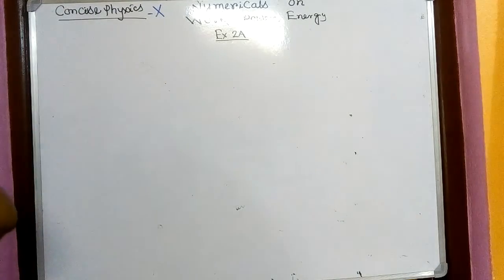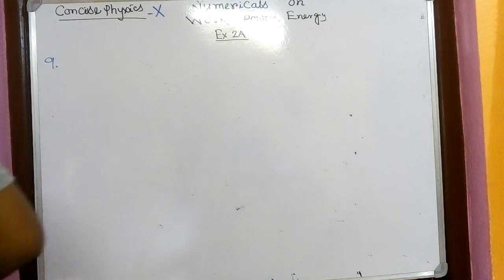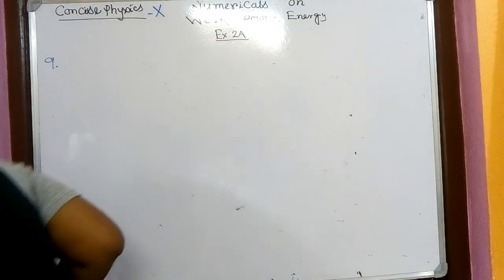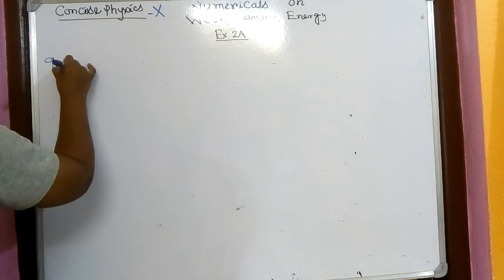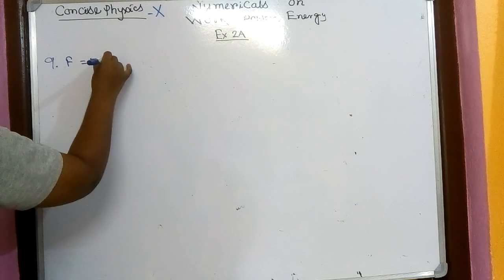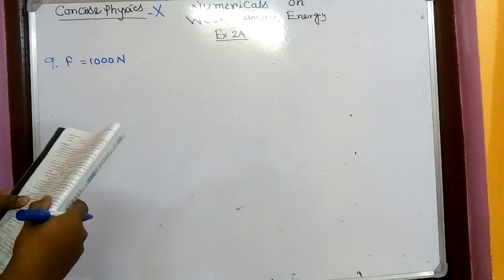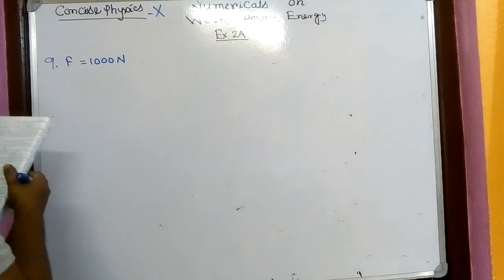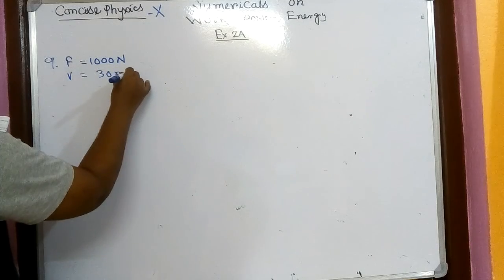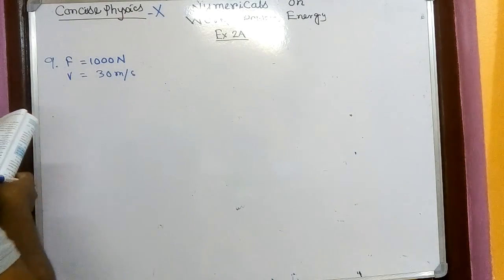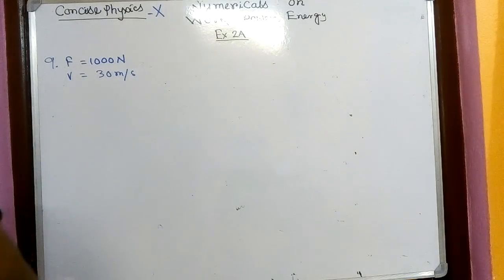First we'll go for question number 9. What is given here: an ox can apply a maximum force of 1000 Newton, so F equals 1000 Newton. It is taking part in a cart race and able to pull the cart at a constant speed of 30 meters per second, so V equals 30 meters per second, while making its best effort. Calculate the power developed by the ox.